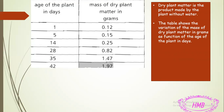To put a title for this table, the title always contains certain terms. We start with 'variation of' because we are studying something that is changing. In this table, the factor that is changing is the mass of dry plant matter in grams. Then we add 'as a function of' the age of the plant in days. So the full title is: variation of the mass of dry plant matter in grams as a function of the age of the plant in days.